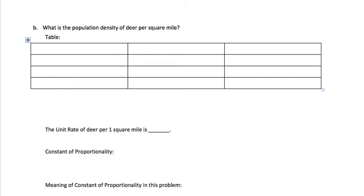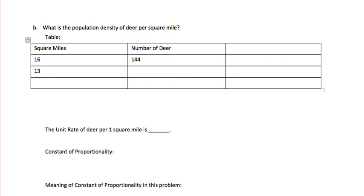In our table, we'll put square miles and then the number of deer, and our final column will be used for calculations. In the first example, there were 16 square miles and 144 deer. The second example was 13 square miles with 117 deer, and our third example was 24 square miles with 216 deer.